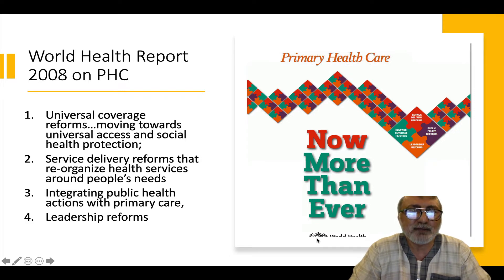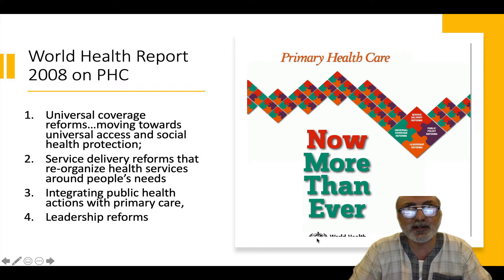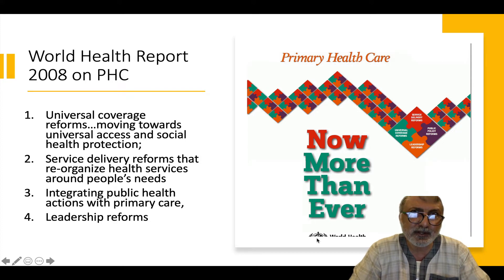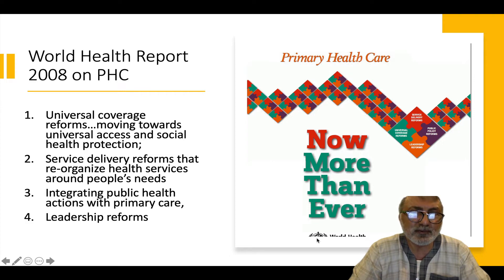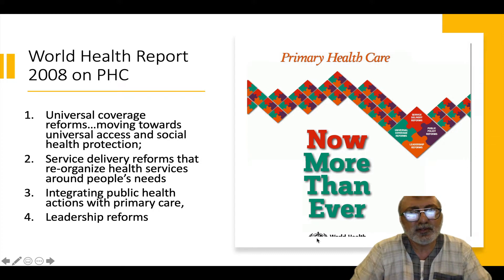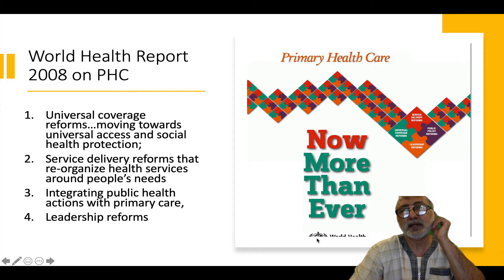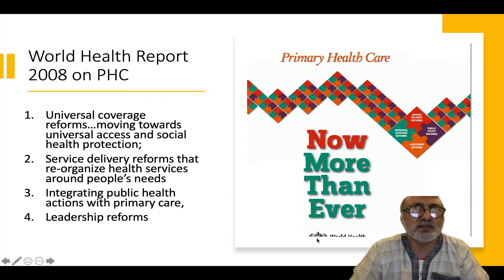In that 2008 report, four things are put forward. One is that we need to talk of universal coverage, moving towards universal health access and social health protection, partly in response to health inequities. The second is about how we reorganize health services around patients' or people's needs — service delivery reforms. The third is that primary health care needs to be integrated with public health actions. And the last one is about leadership reforms. This report is a quite important 30-year anniversary of Alma-Ata. It restates the ideas but shows some subtle differences.